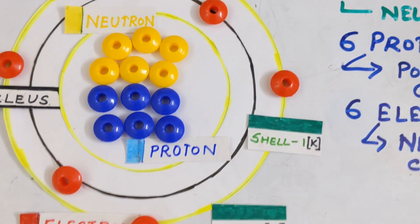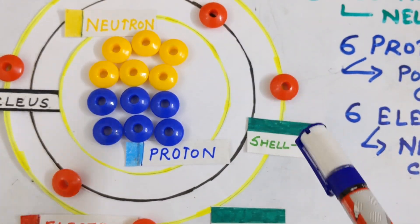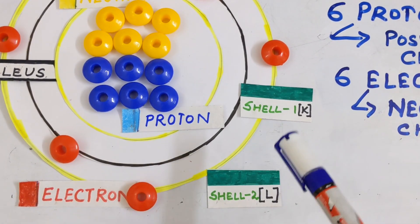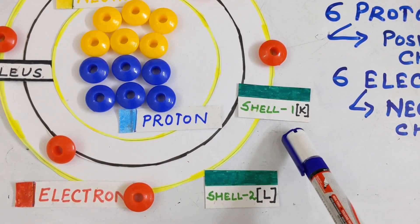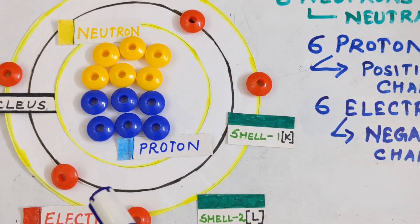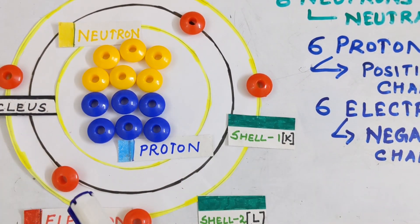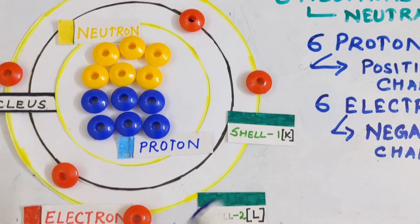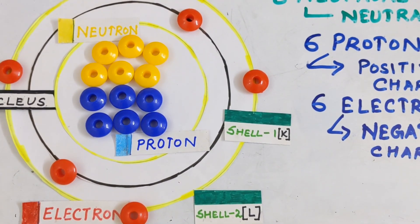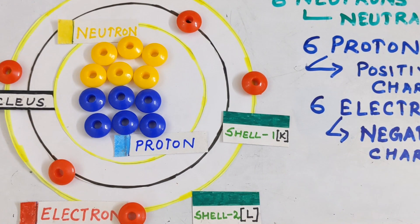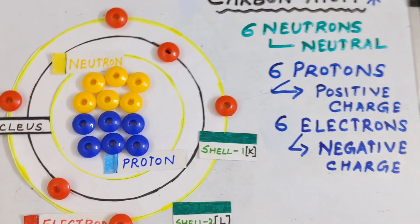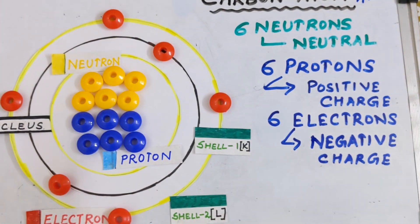The electrons, shown here with red beads, are distributed in the different shells. There are two shells — the first shell is known as the K shell, and the second shell is known as the L shell. There are two electrons present in the first shell, and one, two, three, and four electrons present in the second shell. So in total there are six electrons in an atom of carbon.